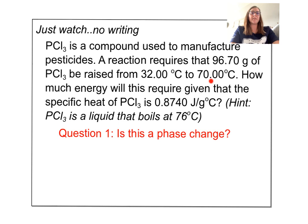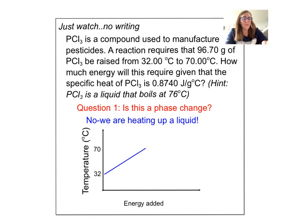A reaction requires that 96.70 grams of the chemical be raised from 32 degrees Celsius to 70 degrees Celsius. How much energy will be required given that the specific heat of this chemical is 0.8740? And there's a hint - this is a liquid that boils at 76 degrees. So my first question, does this include a phase change? In this case it is not a phase change, we are just heating up a liquid. Here's why - we're going from 32 to 70, we're heating it up, but the boiling temperature is 76. So it wouldn't be until we got all the way up to 76 that we would have the phase change. But that is not happening in this problem. So we are not going all the way up to the boiling temperature. This is just a flat line and they told me it's a liquid.